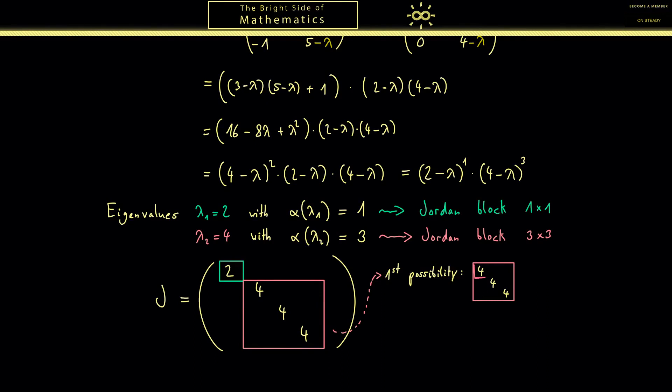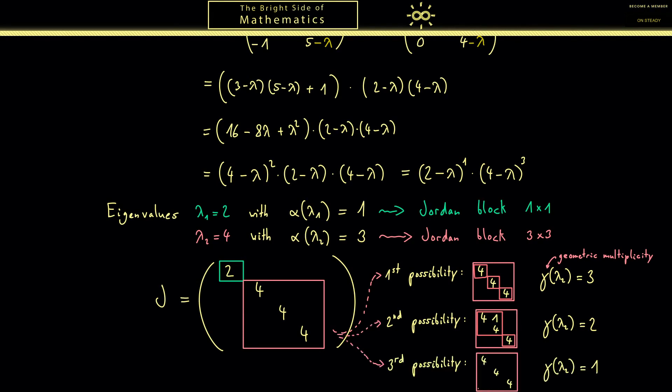And from the last video you already know there are just 3 possibilities in this case. The first possibility would be to have 3 boxes inside the Jordan block, which means the geometric multiplicity of the eigenvalue is 3. So this is the case where the matrix is diagonalizable. Please note I always use gamma to denote the geometric multiplicity. Now the second possibility would be to have the geometric multiplicity as 2, which means we have 2 boxes in the Jordan block. In this case, in the 3x3 block we don't have a choice - the only possibility is to have a 2x2 box and a 1x1 box. And the last possibility is to have just 1 box, which coincides with the geometric multiplicity of 1. Also here don't forget the ones above the diagonal.